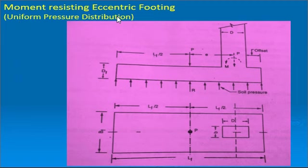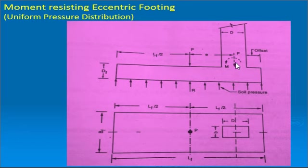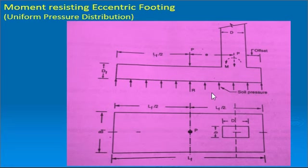For the uniform pressure distribution case: if the column is subjected to a moment, that moment gets transferred to the footing. If we shift the column towards the opposite side of the direction of the moment, the moment gets counterbalanced and we obtain uniform pressure. The eccentricity shown here represents the column shifted to the right-hand side to counterbalance the moment, resulting in a uniform pressure diagram where the effect of the moment is nullified.